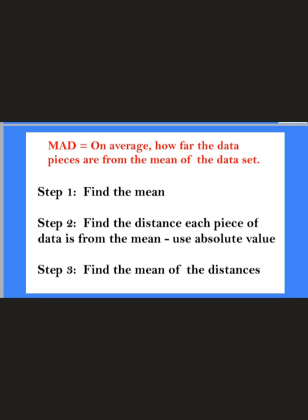Then the last step is to find the mean of those distances. The MAD tells you how much variability is in your data set. If your MAD is a larger number, that means your data set is pretty spread out — there's a lot of variability. If the number is relatively small, say like 1.6, the numbers are pretty close together and there's less variability inside your data set.